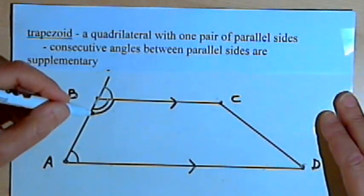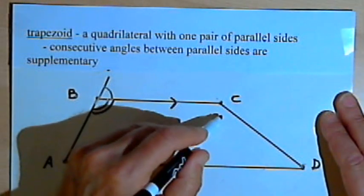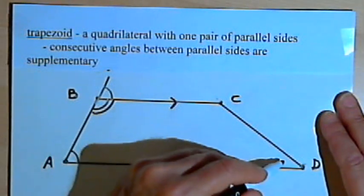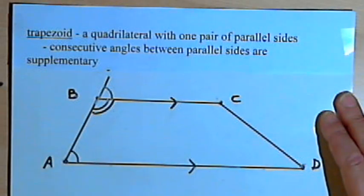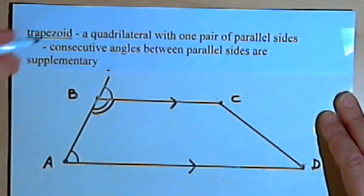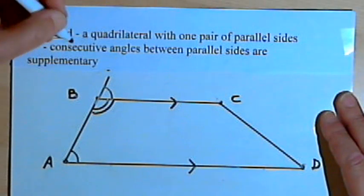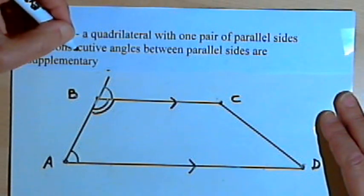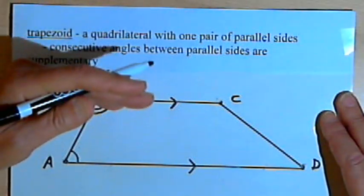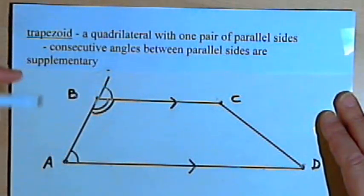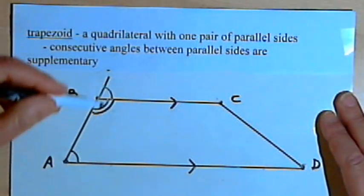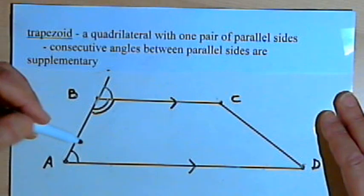In the same way I could go over to angles C and D and show that they're supplementary. So that's our property for all trapezoids: consecutive angles between the parallel sides are supplementary to each other.